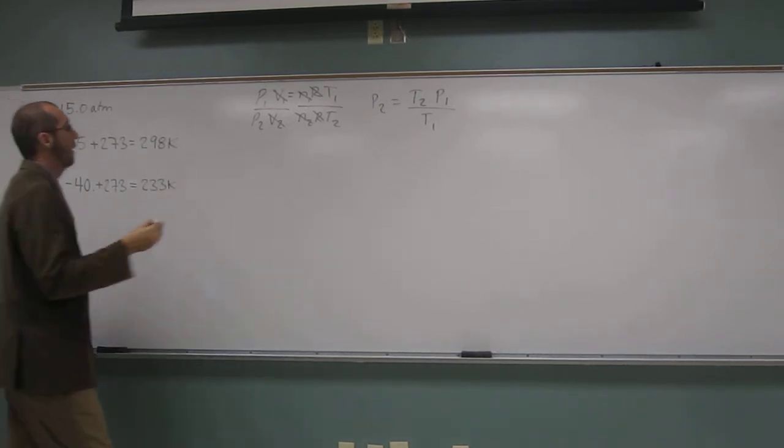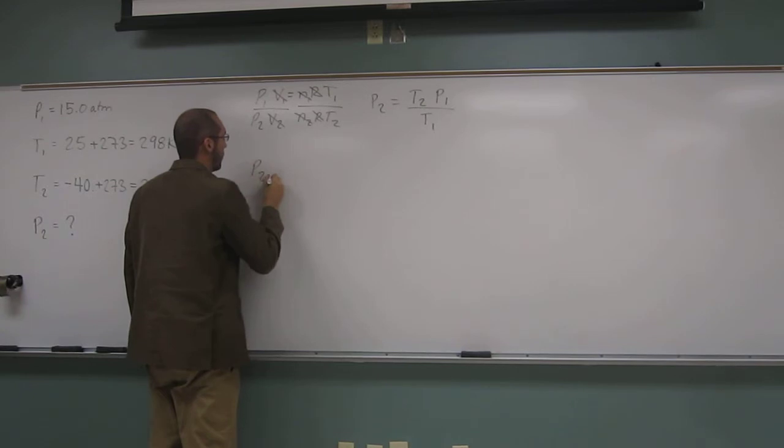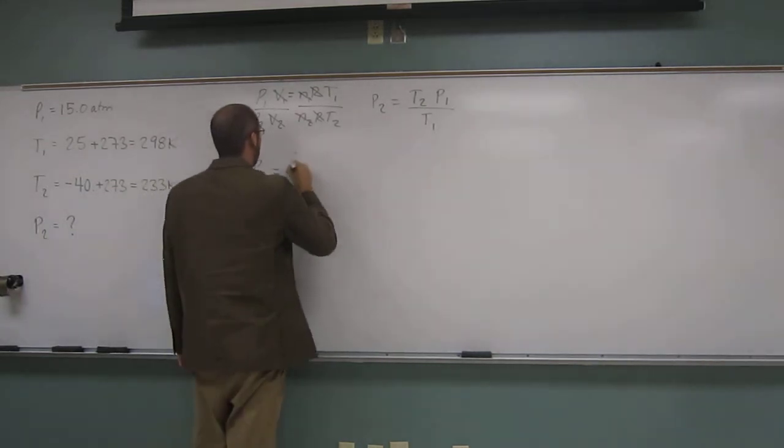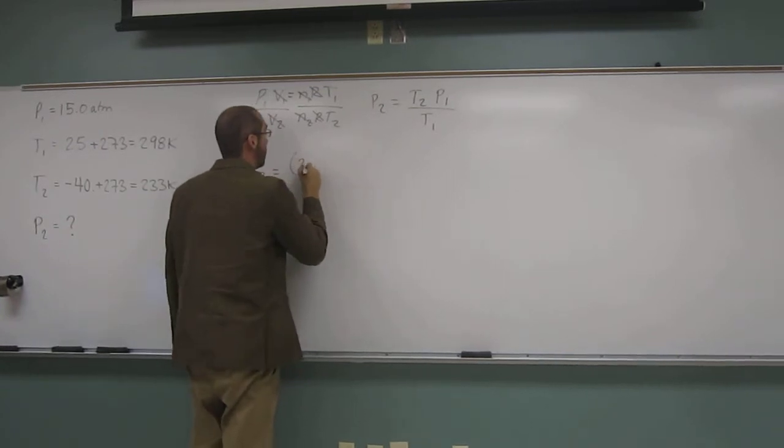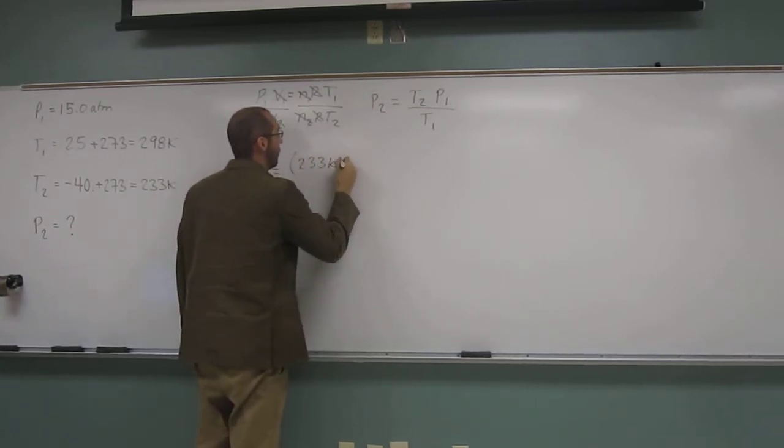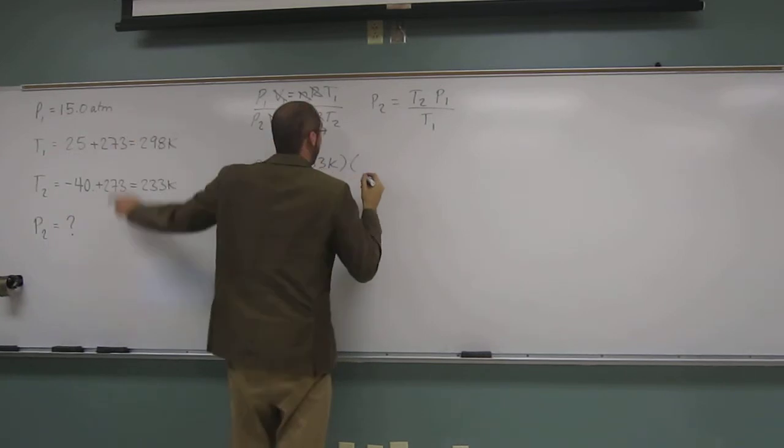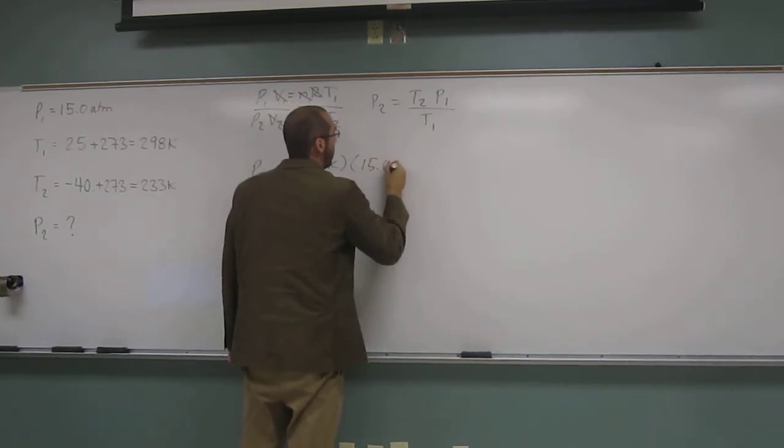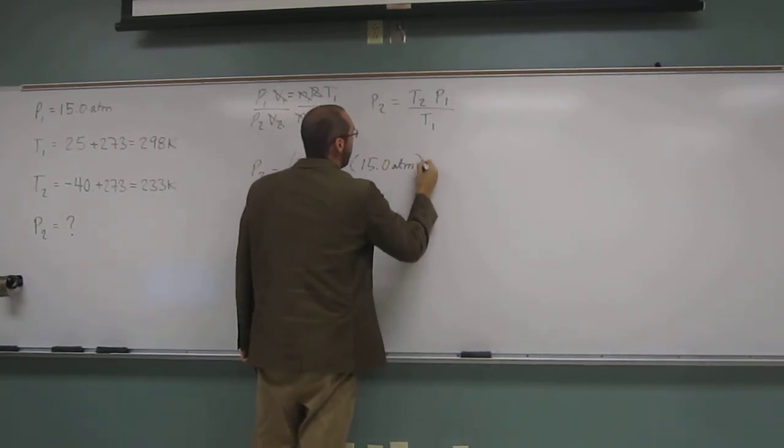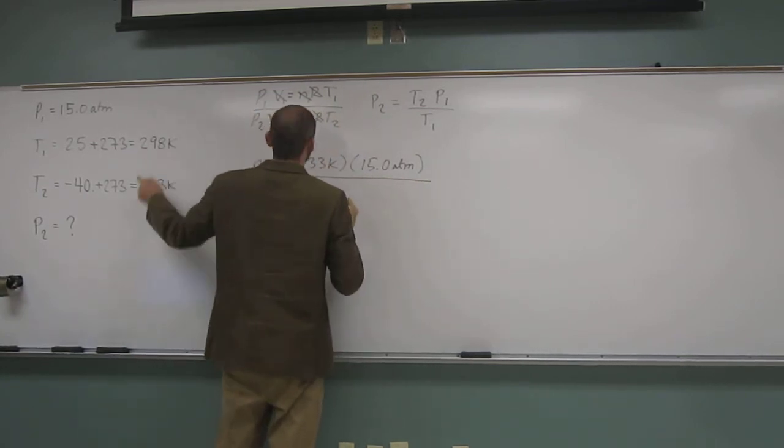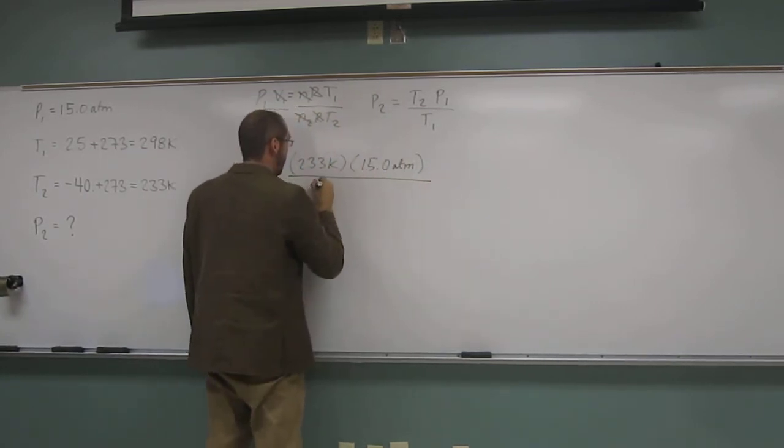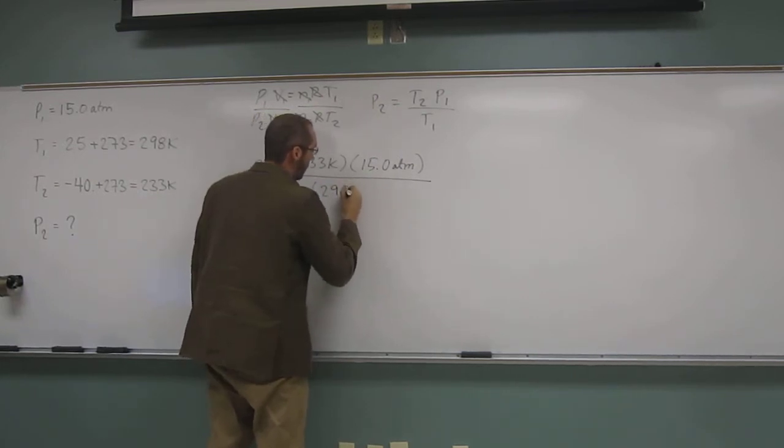So now it's plug and chug. So P2 equals T2, which is 233 Kelvin times P1, 15.0 ATM divided by T1, which is 298.